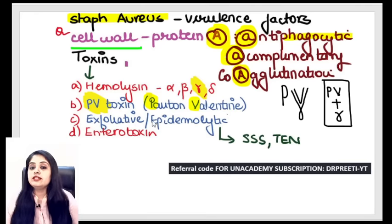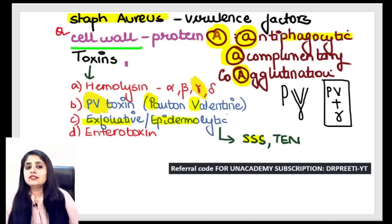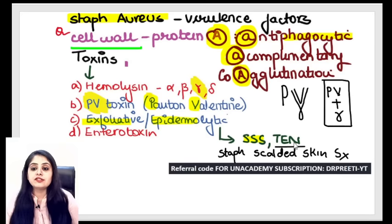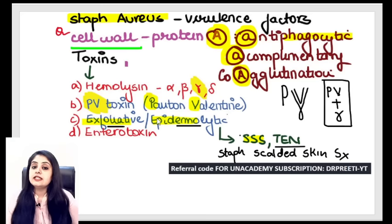There is the exfoliative toxin, also called epidermolytic toxin. Epidermo tells us it causes a skin problem — exfoliation of the skin. Everyone has heard of staphylococcal scalded skin syndrome (SSS). There is also toxic epidermolytic necrosis, or TEN. All these epidermolytic disorders — SSS and TEN — are caused by Staph aureus.